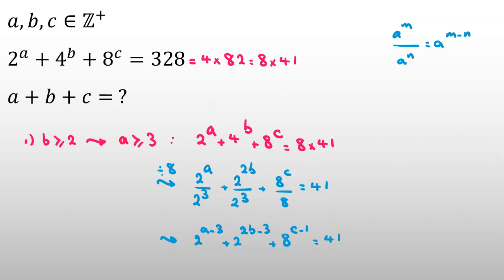And 41 is an odd number. Because B is at least 2, 2B minus 3 is at least 1, so that term is even. For the sum to be odd, one of the remaining terms — 8 to the (C minus 1) and 2 to the (A minus 3) — must be odd and one even. In Case 1.1, if 2 to the (A minus 3) is odd, we conclude A equals 3.